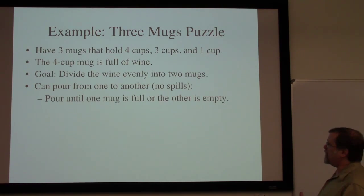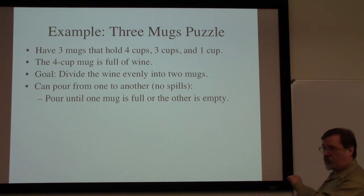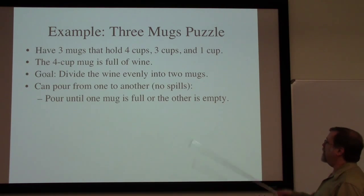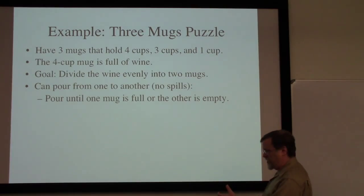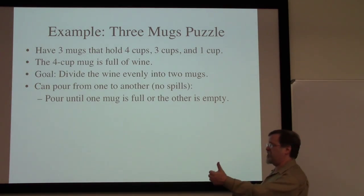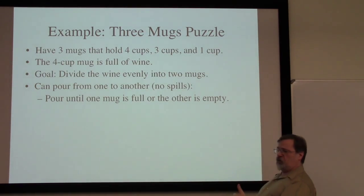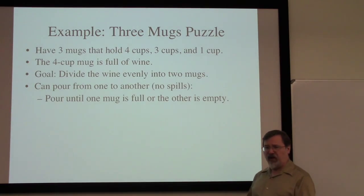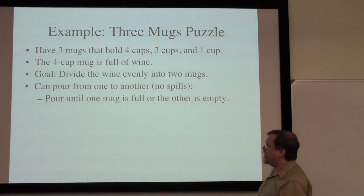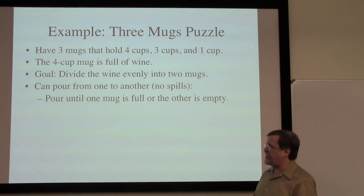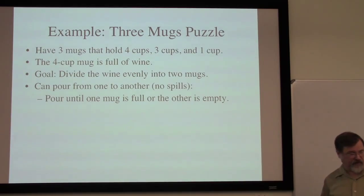When we pour, we have to continue pouring until one mug is full — the one we're pouring into — or the one we're pouring from is empty. You're not allowed to estimate, say, well it seems to be about half full. That sort of answer isn't acceptable, and we can assume the mugs might be funny shaped, so it's hard to tell when it's half full.